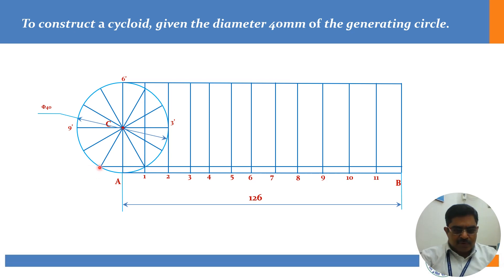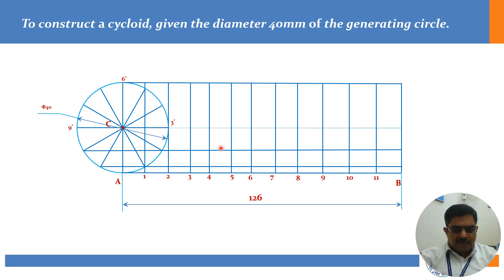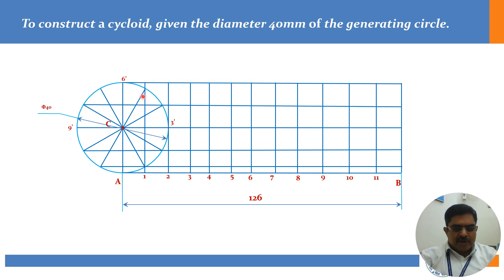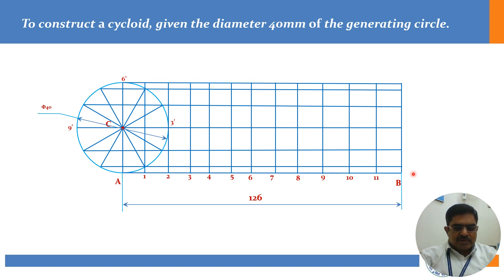Now I am drawing horizontal lines through each division point. From the 11th and 1st points I draw a single horizontal line. From the 2nd and 10th points, another horizontal line. From points 3 and 9, another line. From points 4 and 8, one horizontal line. From points 5 and 7, one more horizontal line. And from point 6 we have drawn the horizontal line. Once you draw all these lines, the method becomes very simple and easy to complete the cycloid.